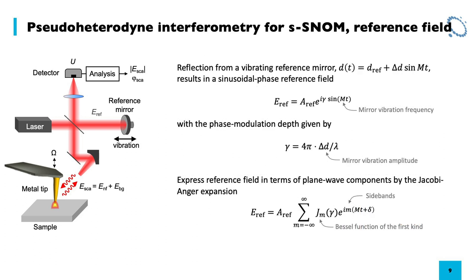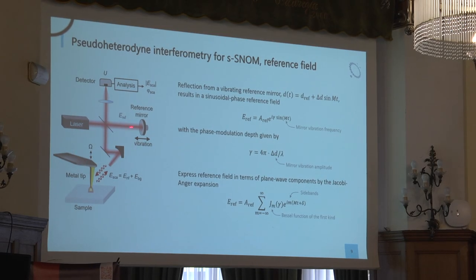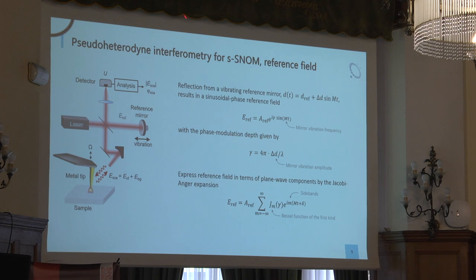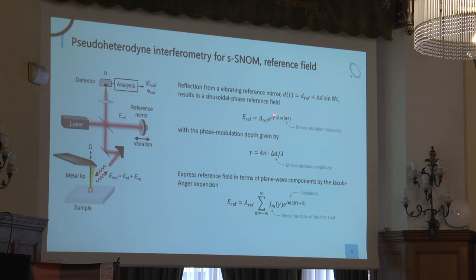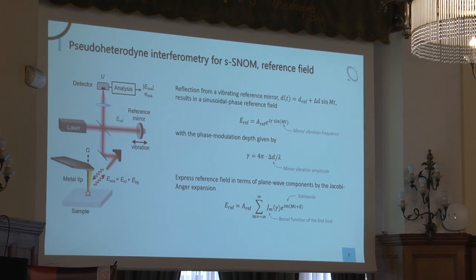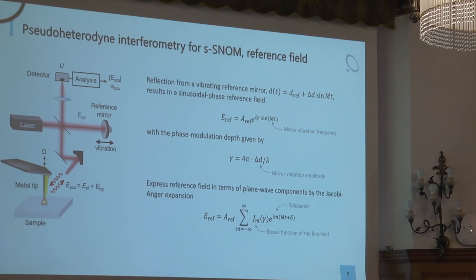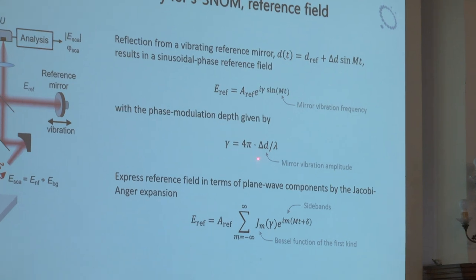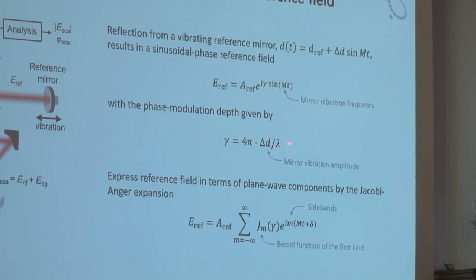Now what about the reference? The reference is created by reflecting our incident field from a mirror. We can make the mirror vibrate sinusoidally by applying a voltage to a piezo. What happens is that the phase of the reference field is modulated. We write this mathematically as follows: we have our reference field amplitude, and then an oscillatory part in our exponential function — a sine wave where M is the mirror vibration frequency. The variable gamma is the depth of the phase modulation — that is, how large we modulate the phase. This is related to the mirror vibration amplitude and to the wavelength of your laser line.